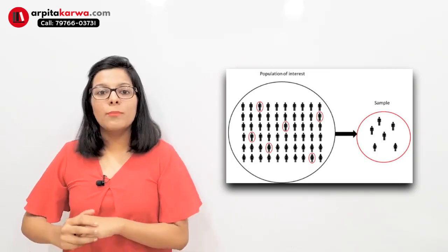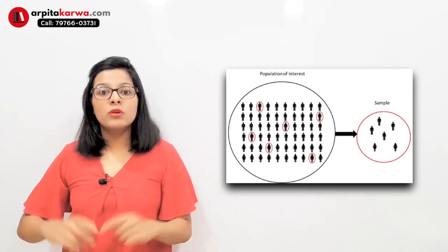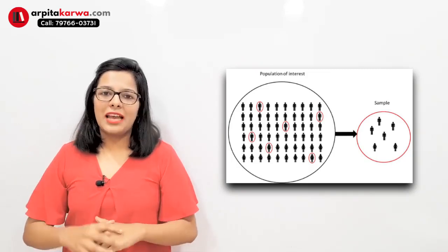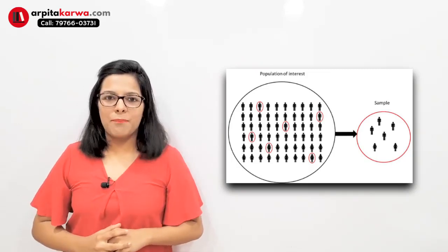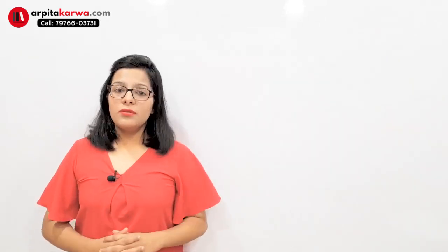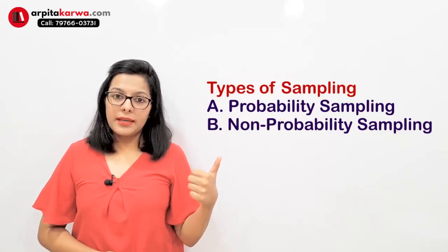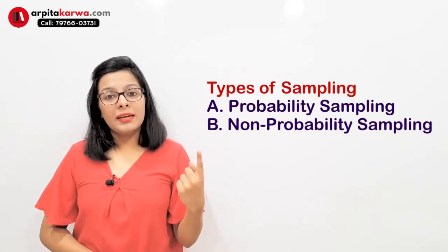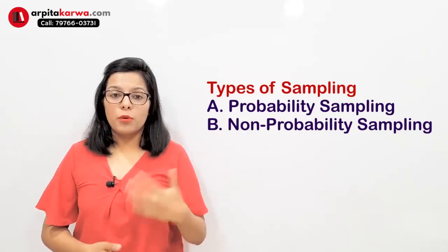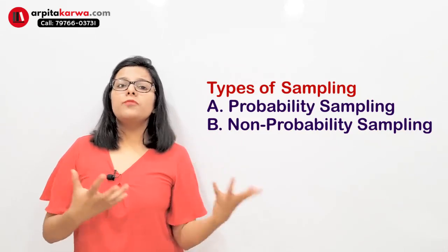There are various ways in which Mira can choose the sample. When it comes to sampling, there are basically two kinds: one is probability sampling and one is non-probability sampling.